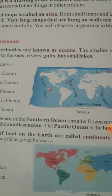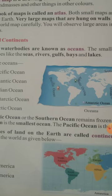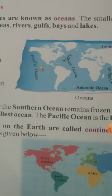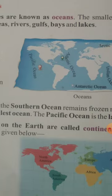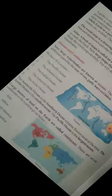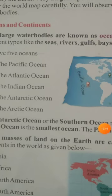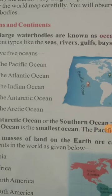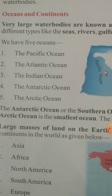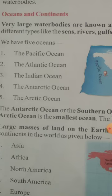Large masses of land on the earth are called continents. There are seven continents in the world: Asia, Africa, North America, South America, Europe, Antarctica, and Australia.